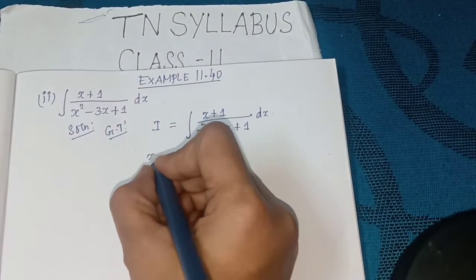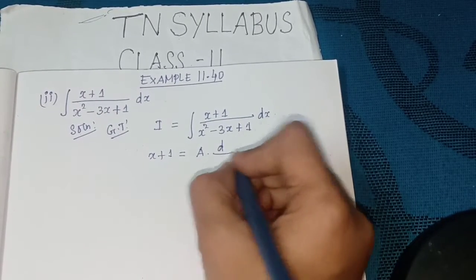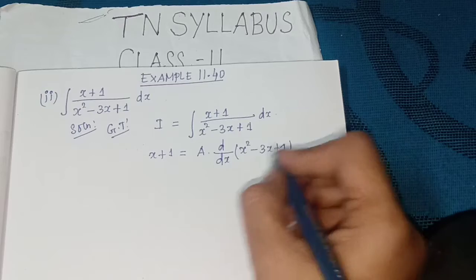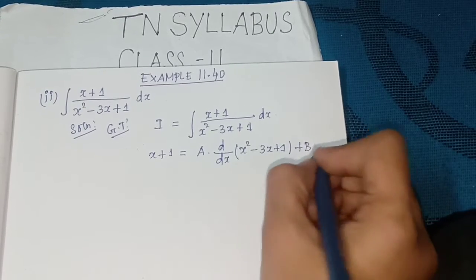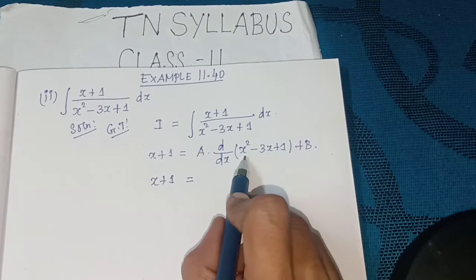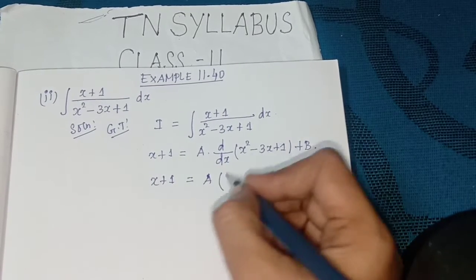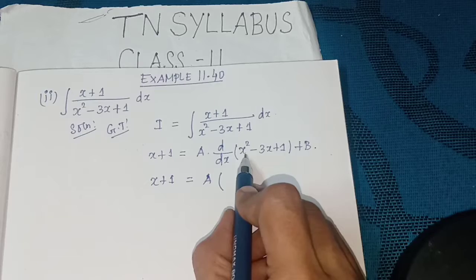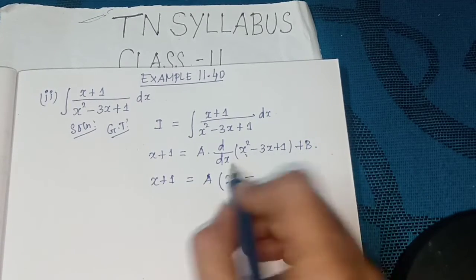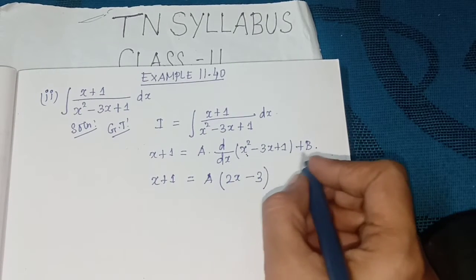So we write x + 1 equal to a into d/dx of (x² - 3x + 1) plus b. Now differentiate: a into d/dx of x² gives 2x, minus 3x differentiates to minus 3, and 1 differentiates to 0, plus b.